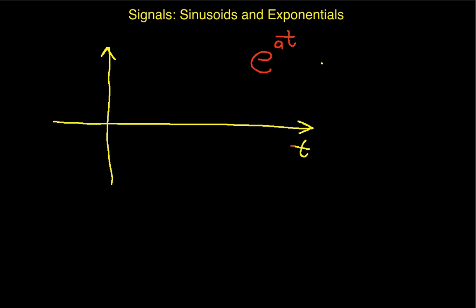We'll talk about complex exponentials in just a minute. If A is positive, then this exponential looks something like this, where at a value of T equals 0, it has a value of 1. If A is negative, so this corresponds to A positive. If A is negative, then it looks like this. It's what we oftentimes call a decaying exponential.